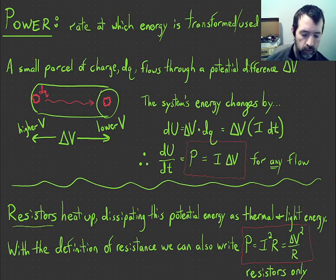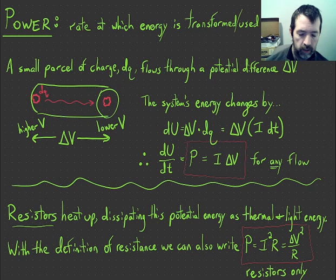And if you use the definition of resistance R equals V over I, you can create two additional power forms, which I have here in this other box. In the first one, all I've done is replace the delta V with I·R, so then I have I squared R. And in the second one, I instead have replaced the I with V over R, so then I have delta V squared over R.